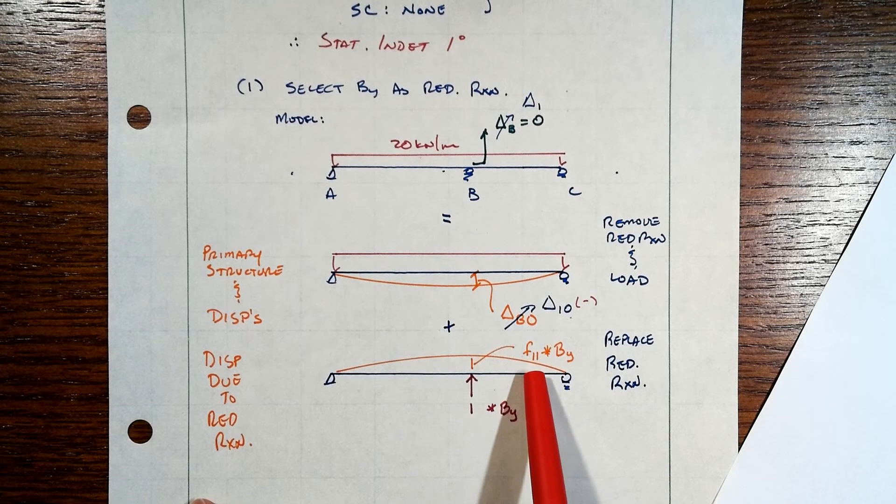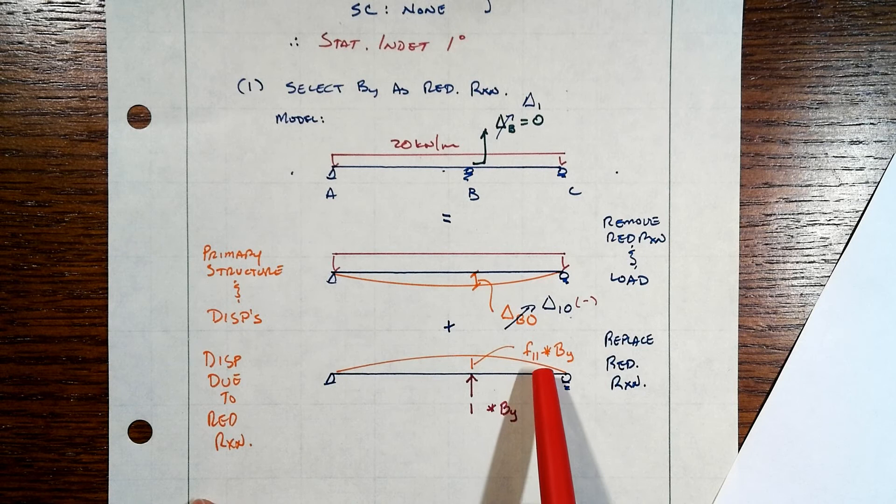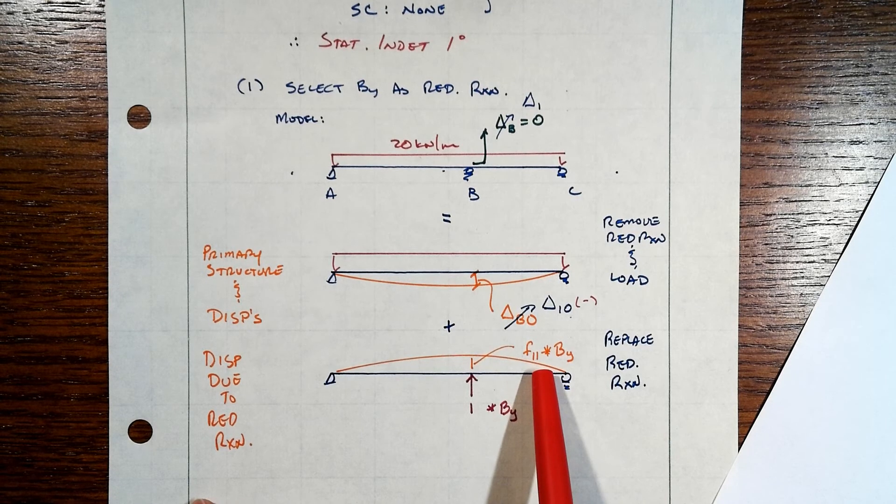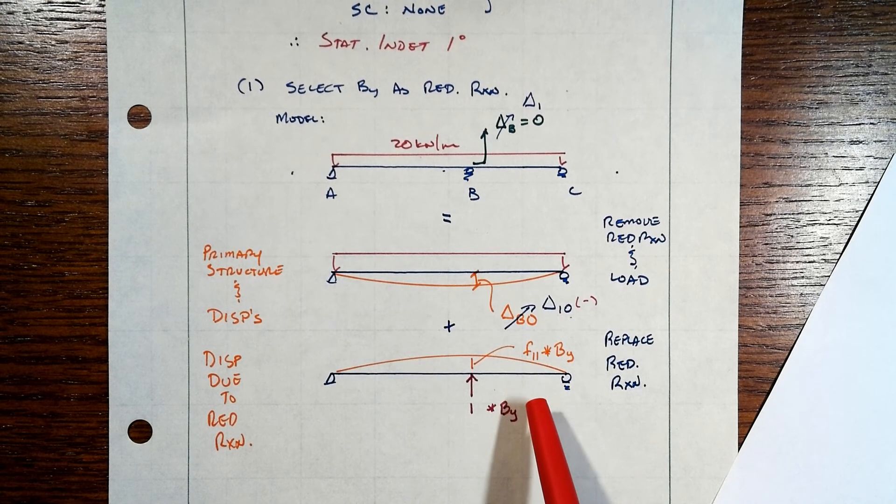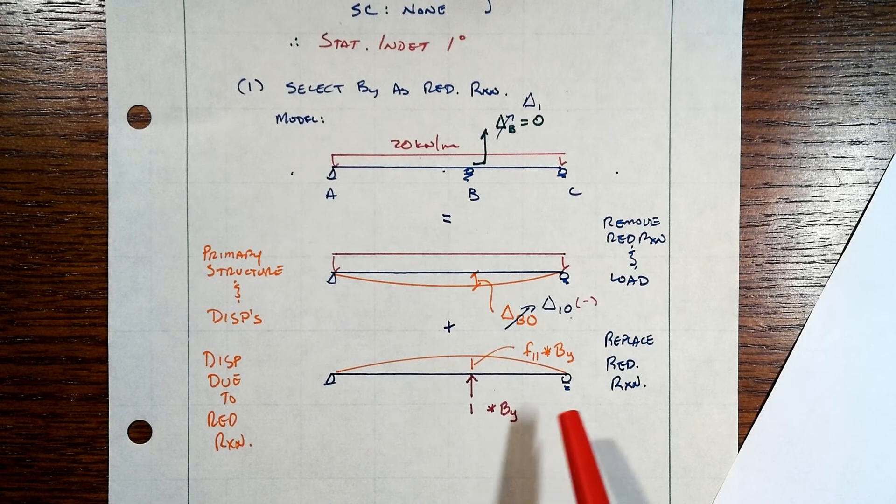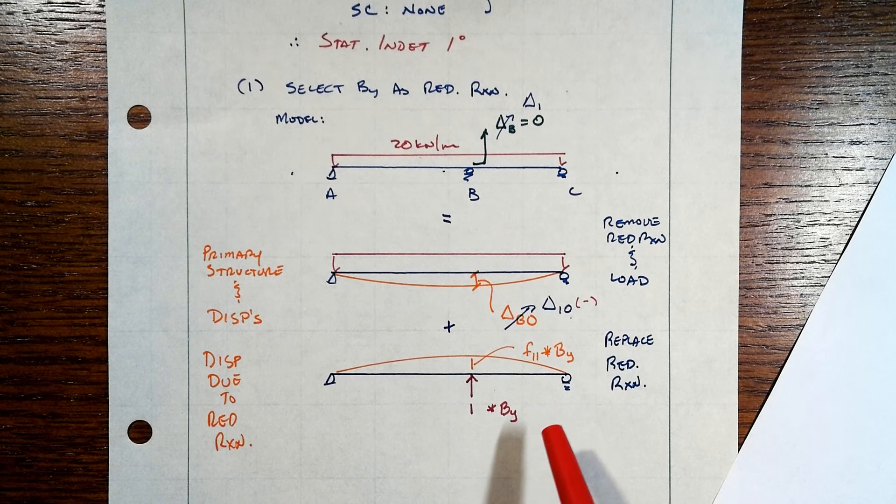It's the displacement at degree of freedom one, caused by a unit load being applied at degree of freedom one in this case. And that's how we start working with the multiple redundant reactions. We'd have displacements at degree of freedom two, caused by the unit load at one, and et cetera, et cetera, et cetera, for the more complex problem.